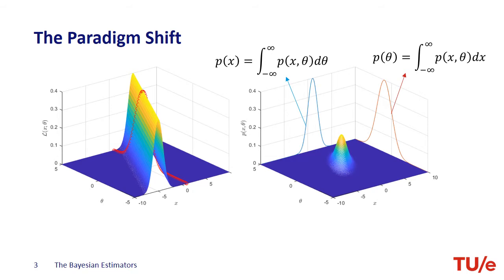On the right-hand side, we depict the consequence of the paradigm shift. The DC voltage level is also a random variable. In this setting, we talk about the joint probability density function. To understand the operation of the Bayesian estimator, we need to consider the relation between joint probability, the conditional probabilities, and marginal probabilities. On the walls of the three-dimensional plot, you can see the marginal probability density functions. Now, what does that mean?